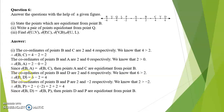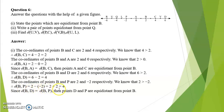Another example: coordinates of B and D are 2 and 6. Since 6 is greater than 2, length BD is 6 minus 2, which is 4. For points B and P, coordinates are 2 and negative 2. Since 2 is greater than negative 2, distance BP is 2 minus negative 2, equal to 2 plus 2, which is 4. Since distance BD equals distance BP, points D and P are equidistant from point B.